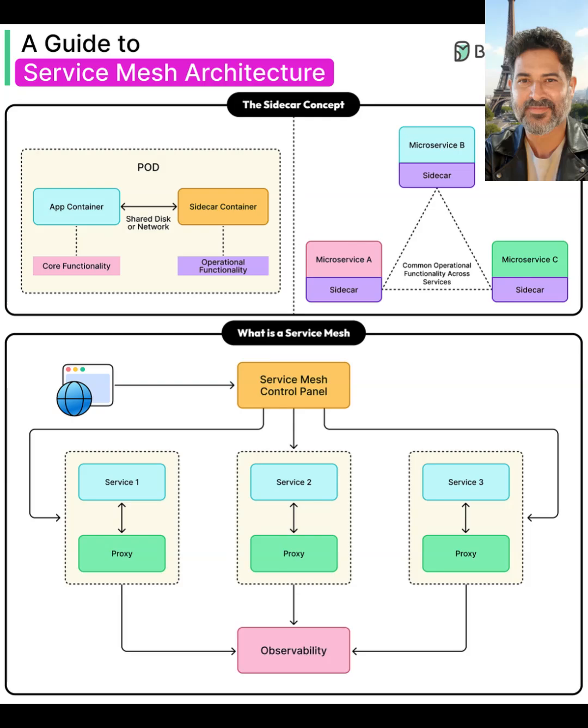A service mesh is essentially the network of all these sidecar proxies working together under a central control plane. Instead of every service implementing its own communication logic, the mesh standardizes discovery, routing, security, and observability for all services in the system.